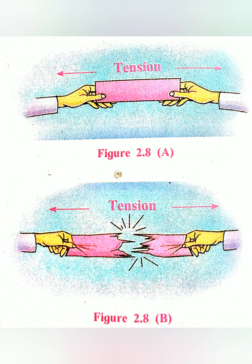Now we move to Activity 2. Take a long strip of thin paper, hold one end in your right hand and the other in your left hand, then pull both ends away from each other. Observe what happens to the strip. In Activity 2, tension is created when you pull both ends away from each other. Similarly, when movements occur in opposite directions, tension is generated and faults are formed in the earth's crust.